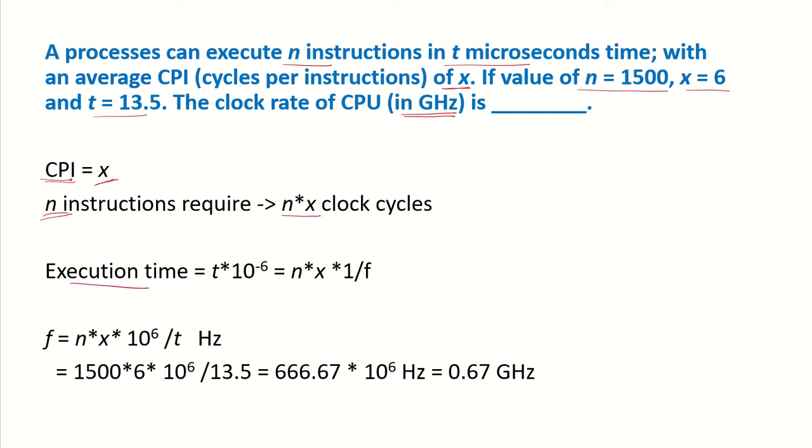Now the execution time, if this is the number of clock cycles, if we multiply this by the clock cycle time, so if we do NX into the time of the clock cycle, this will be the total execution time of the N instructions. And this T we know is inverse of the clock rate, so we can write as NX into 1 upon F. So the execution time would be NX into 1 upon F, and this is given as T microseconds.